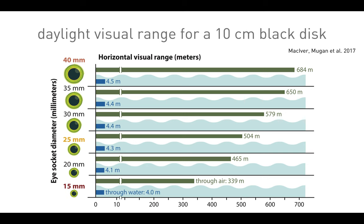Just look at the bottom row for now. Orbit size here: 15 millimeters. The range through water at coastal water turbidity — similar to what ancestral vertebrates that transitioned to land lived in — gave four meters of range for a 10-centimeter black disk in full daylight. Whereas through air, with a small tweak in the corneal shape, you can get two orders of magnitude longer range. Attenuation length of light in water is on the order of meters; attenuation length of light in air is on the order of 100 kilometers.